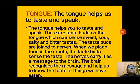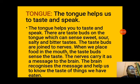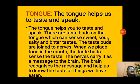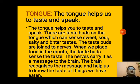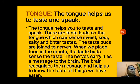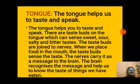The next sense organ is the tongue. The tongue is also a very important sense organ — it helps us to taste and speak. There are taste buds on the tongue which can sense sweet, sour, salty, and bitter taste. Different taste buds are present in different parts of the tongue. When we place food in the mouth, the taste buds sense the taste.